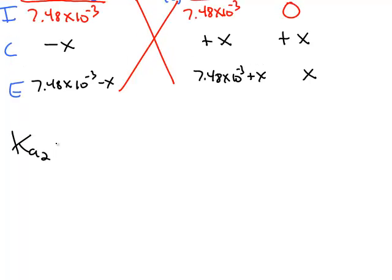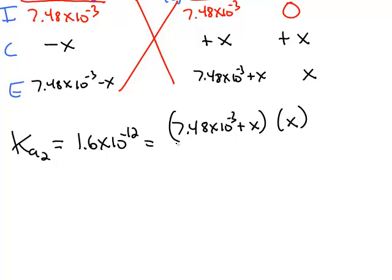And just like always, we use the Ka. This one's the second Ka, 1.6 times 10 to the negative 12th. Notice the second K is even smaller than the first one. The K's get smaller as the acid keeps donating its protons. Ka1 is always larger than Ka2. Ka2 would always be greater than Ka3 and so on.